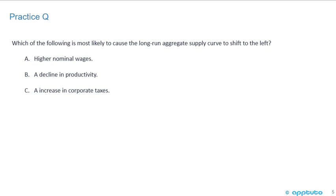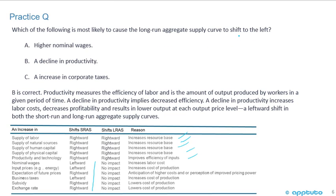Let's do a quick practice question. Which of the following is most likely to cause the long-run aggregate supply curve to shift to the left? A: higher nominal wages; B: a decline in productivity; or C: an increase in corporate taxes. A shift to the left is the opposite of a rightward shift. If we increase productivity that's rightward, so a decrease in productivity would be leftward. We need to be careful here because the question specifically asks about the long-run aggregate supply.